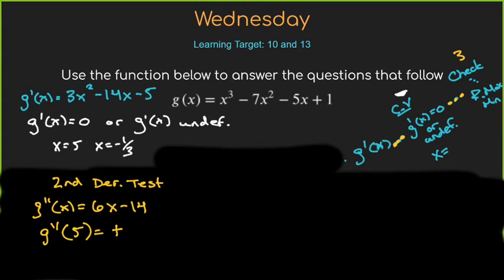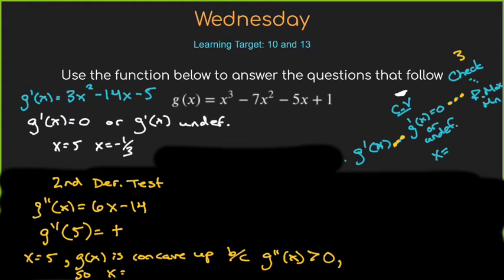Pause right there. Pause, pause, pause. Cause you're giving us a lot. Notice what she said. She said, all right, the second derivative wasn't hard to get. Then I can just plug in my critical value. So she's saying at X equals five, G of X is concave up because G double prime of X is greater than zero. So X equals five is a relative minimum on G of X. I see this. I don't see this.